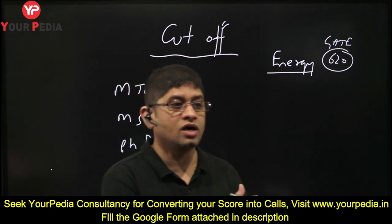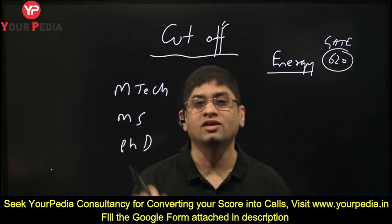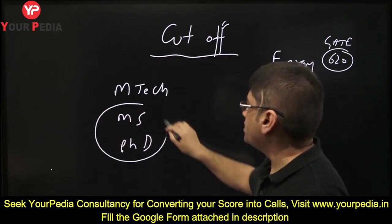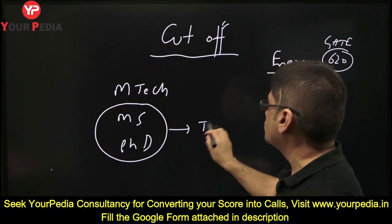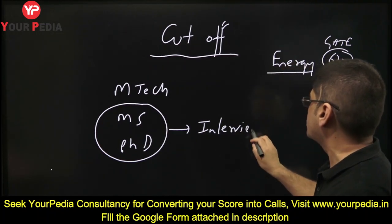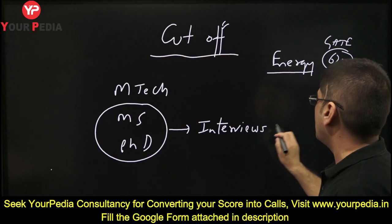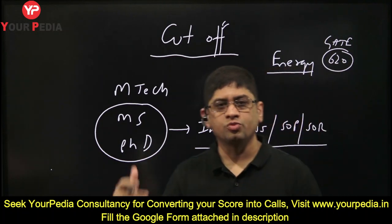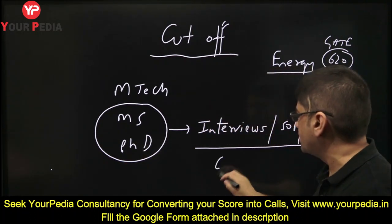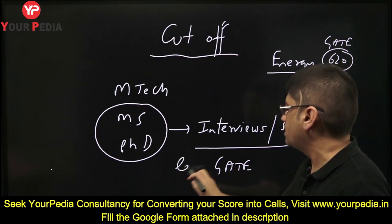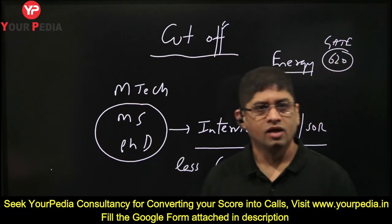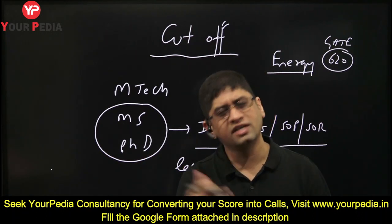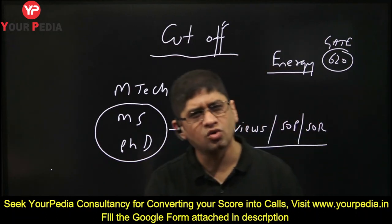Also, whether it is through the spot round or regular round is not mentioned. Now, for MS and PhD, which are interview-based, there are interviews and SOP/SOR requirements. Where interviews, SOP, and SOR are required, the GATE score needed is less. So MS and PhD cut-offs are not published — it is not required, it is not put. Cut-off is not a criteria there.